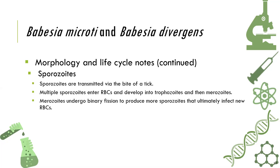The sporozoites are transmitted via the bite of the tick. One other important difference between Plasmodium and Babesia: Plasmodium is capable of undergoing exo-erythrocytic stages, while Babesia species do not undergo the exo-erythrocytic stage.